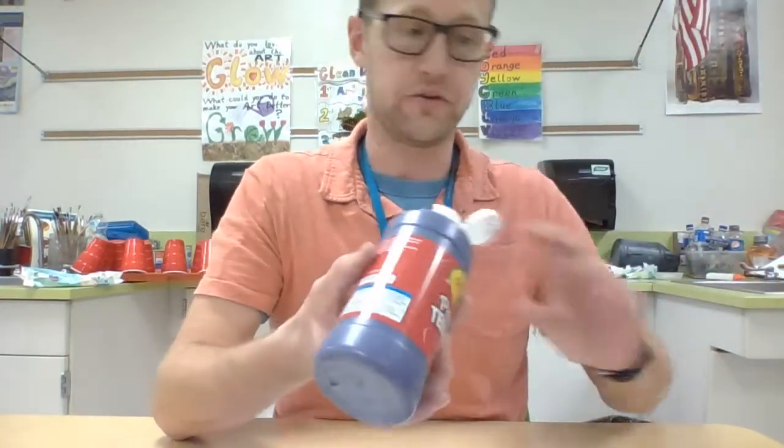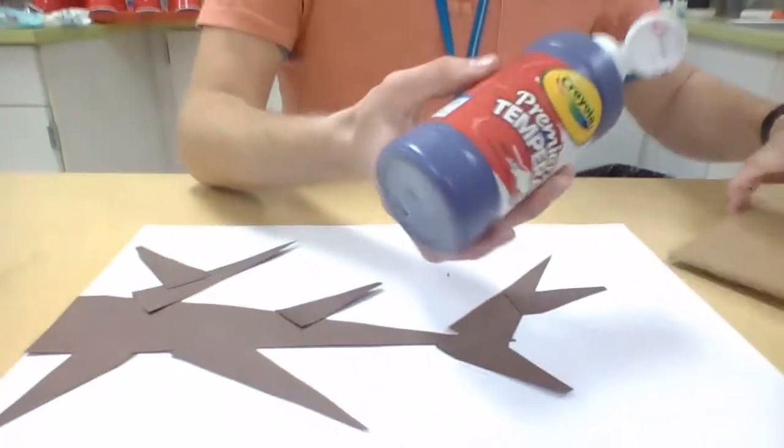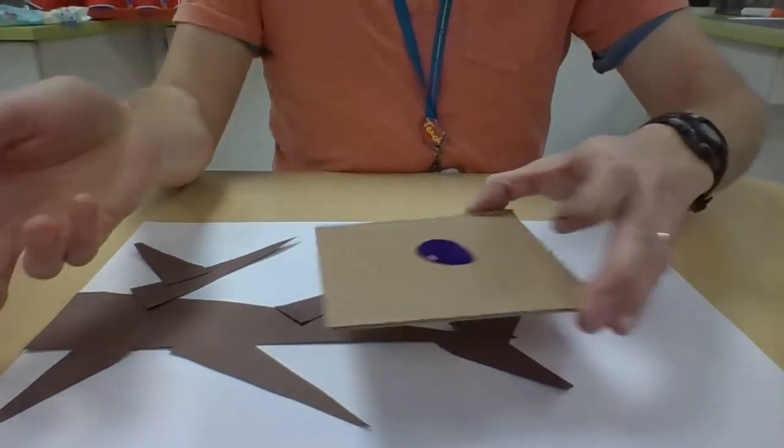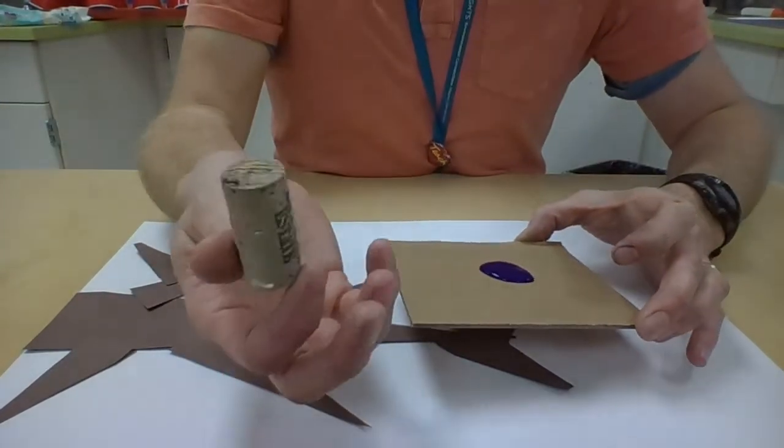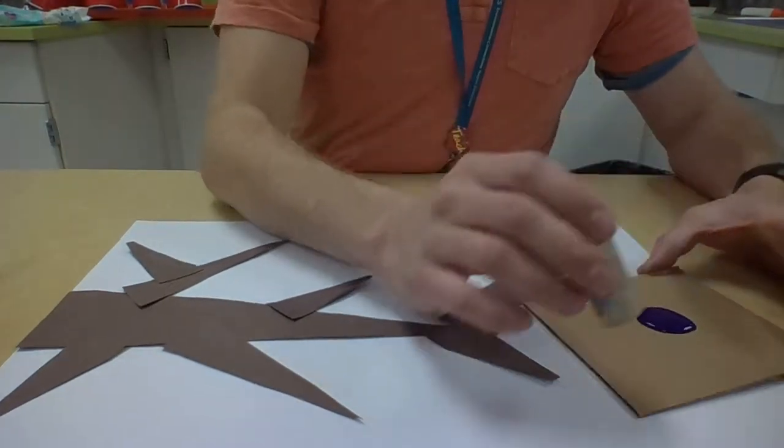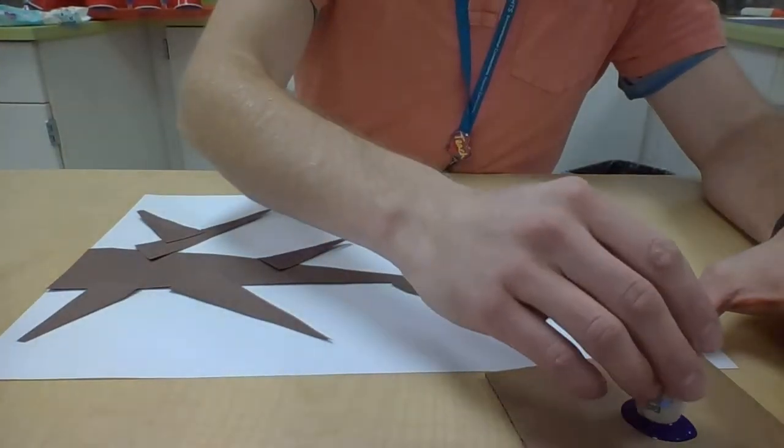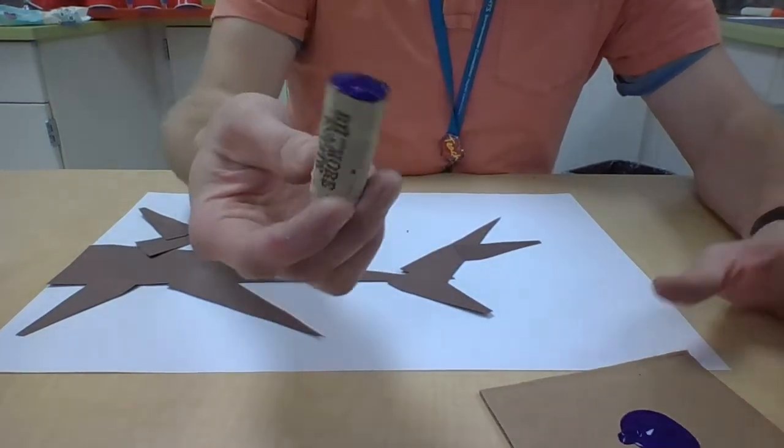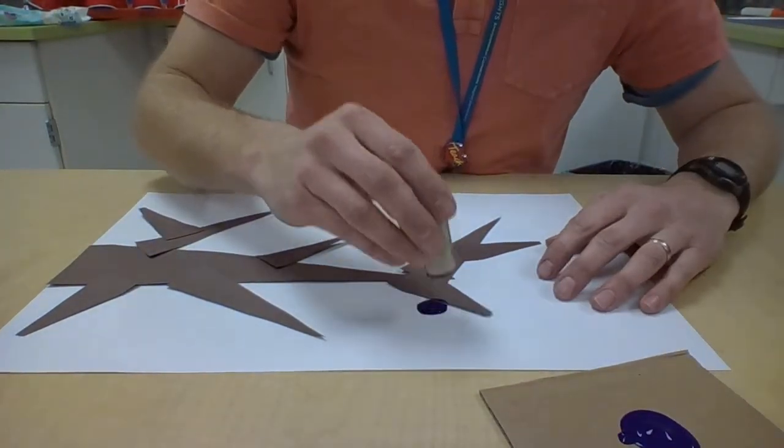I'm going to do purple flowers. Your teacher is going to give you a cork. We're going to dip it and use that as our paintbrush this time, and we're going to dot it on there to make our flowers.